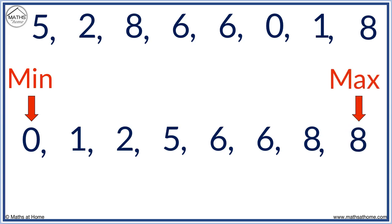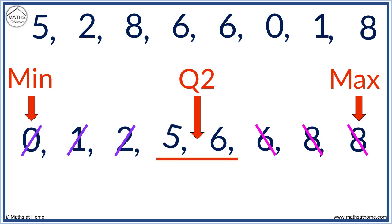Now we find Q2, the median. We cross off at each end. Now we have two numbers remaining. We can't cross them both out. If there are two numbers remaining, we look directly between them for the median. Halfway between five and six is 5.5.